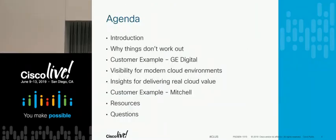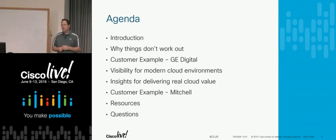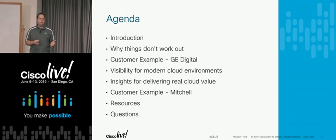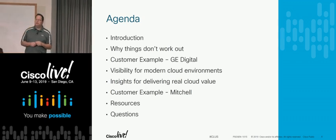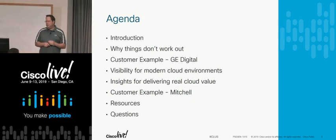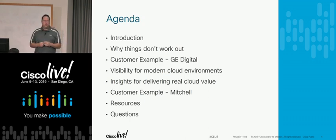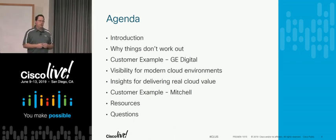This is what we're going to talk about today. We're going to talk about what's going on in the cloud and why things aren't working necessarily as expected. In most cases, they don't quite work out the way you expect when you first start getting into cloud. Then we'll have Steve come up and talk about what they're doing at GE Digital. And then we'll talk about some of the solutions at AppDynamics before Marius comes up to talk about what they're doing at Mitchell. It should be a really interesting session.